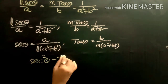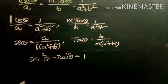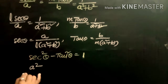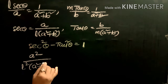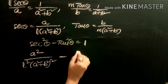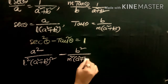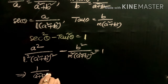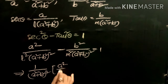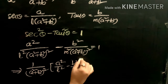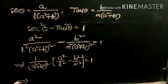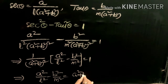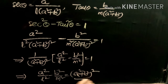Using the identity sec²θ - tan²θ = 1 and substituting the values: a²/l²·(a² + b²)² - b²/m²·(a² + b²)² = 1. Taking out 1/(a² + b²)² as common factor: a²/l² - b²/m² = (a² + b²)². This is the required answer.